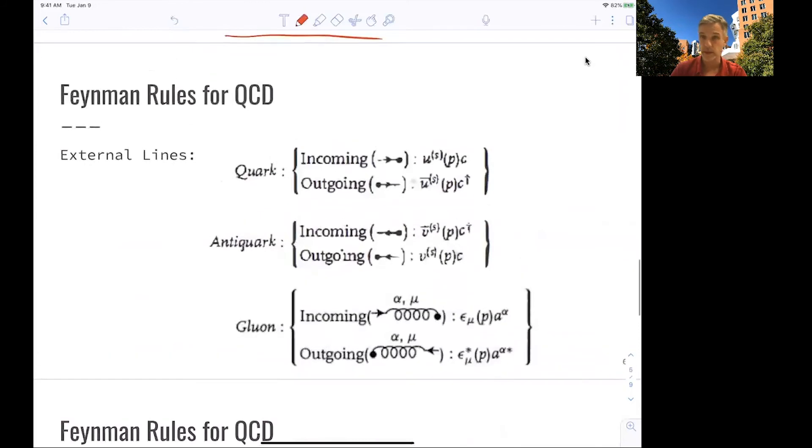So now we are ready to just write down the QCD Feynman rules. Again, we start from the external lines. So for the incoming quark or outgoing quark, we write our spinor. And then we keep track of color. We do this for quarks, and we do this for anti-quarks in the very same way.